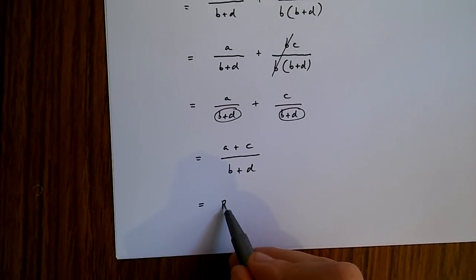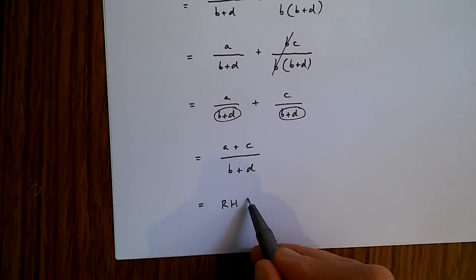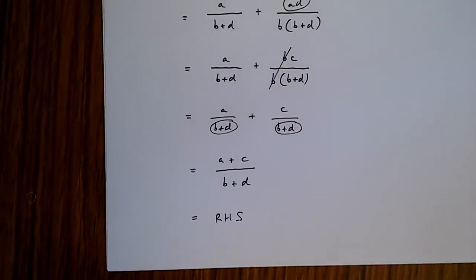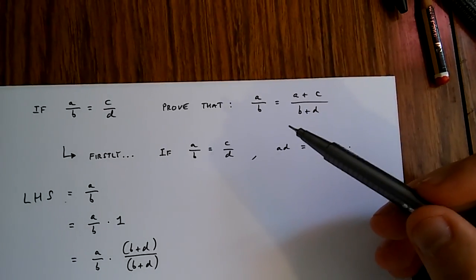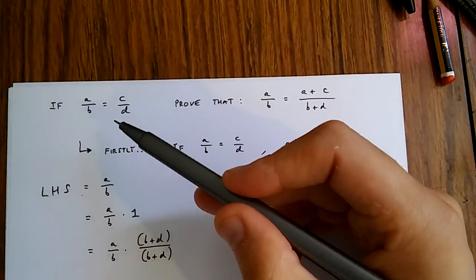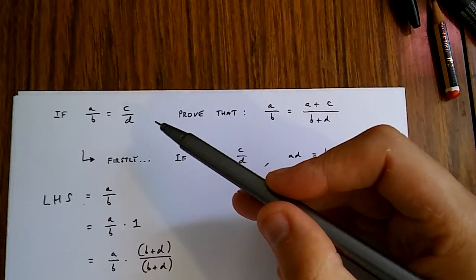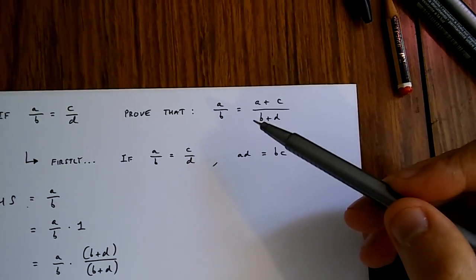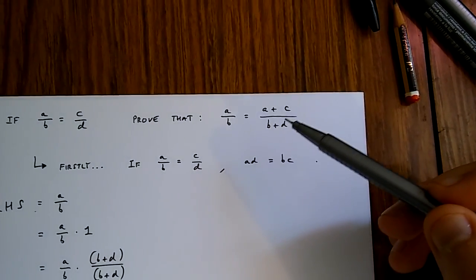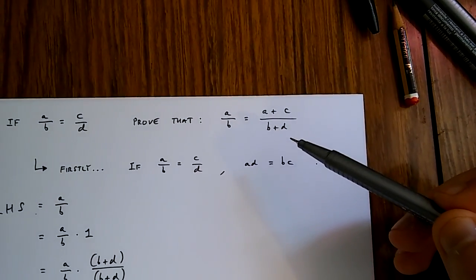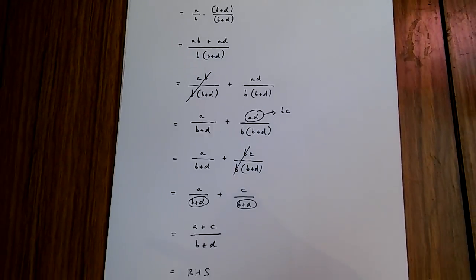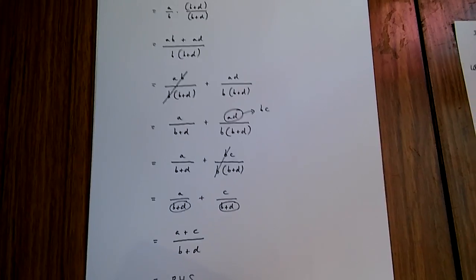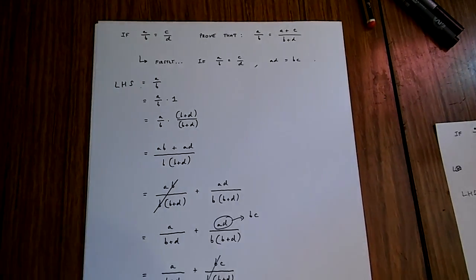And this is equal to the right-hand side. So we've proven that if a over b is equal to c over d, then a over b is equal to a plus c over b plus d. If you have any questions regarding this video, please leave your comments below.